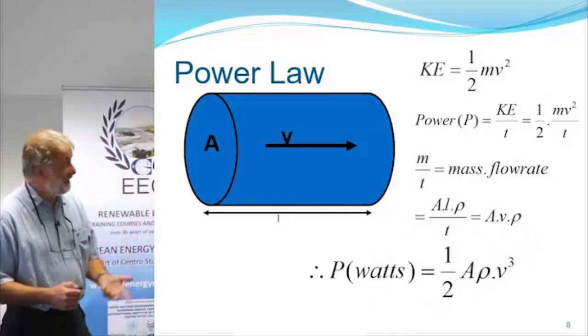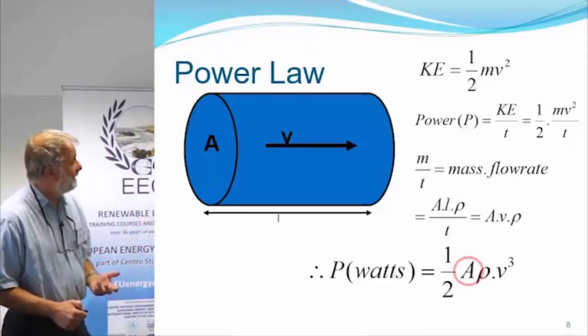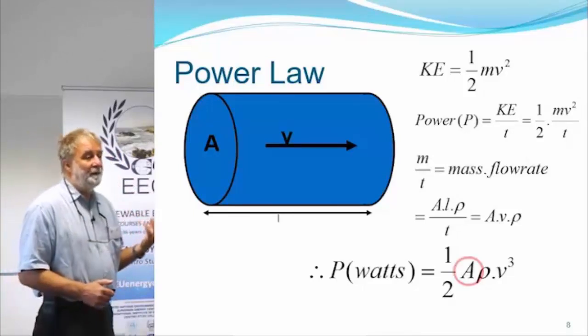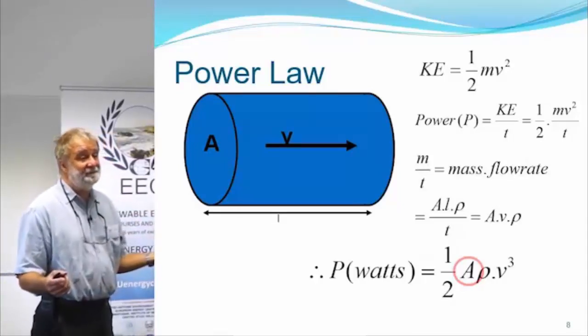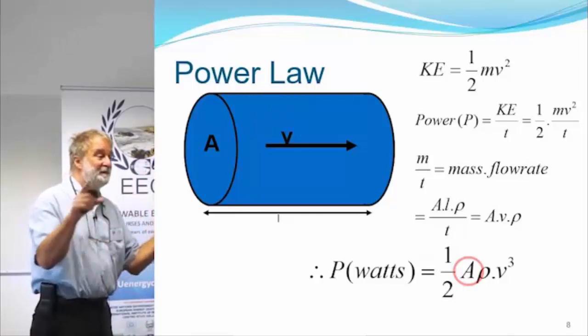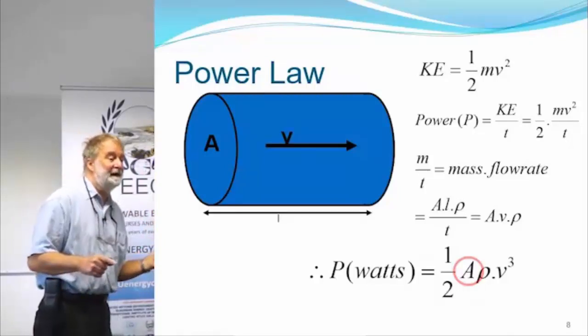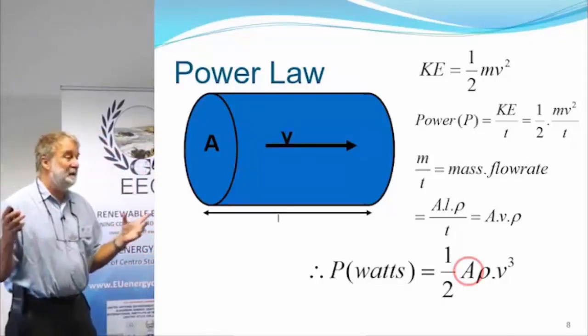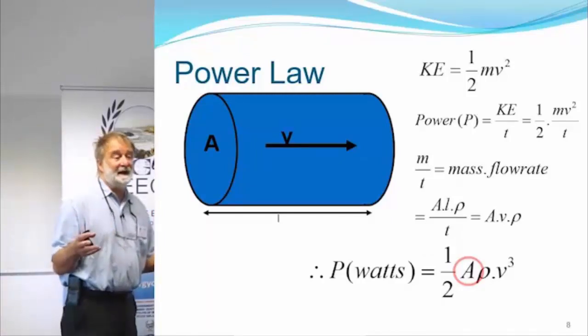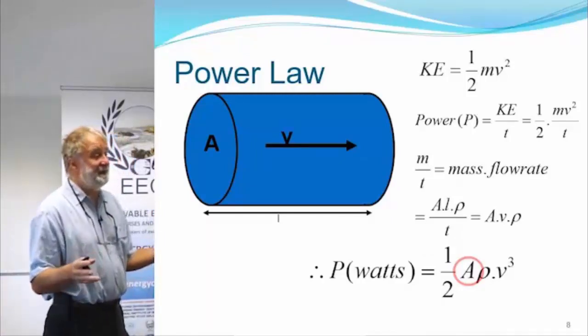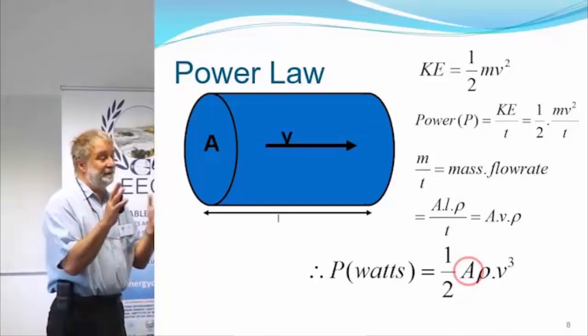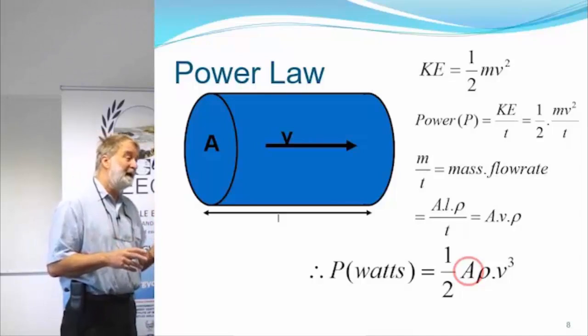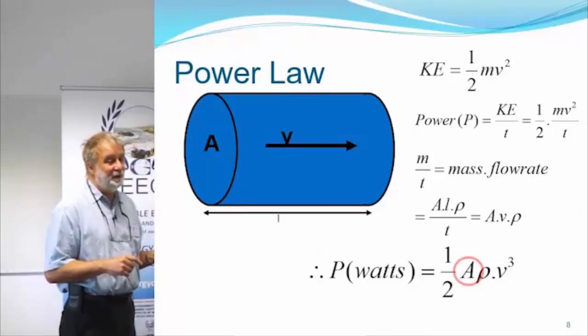And there are two things to note about this really. The first is if you want more power for a fixed wind speed, you've got to have a bigger area. Doesn't matter what shape it is, it can be square or round, but you've got to have a bigger area. And that's why when we started looking at megawatt scale wind turbines, they're big, they're very big. For the people who don't like wind and they say, why can't they be smaller? That's the reason why they can't be smaller.